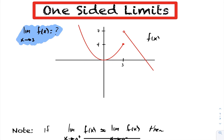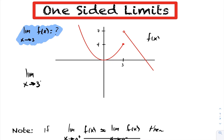To answer that question, what we have to do is take a look at what's called one-sided limits. So if I want to express or ask what is the limit as I approach 3 from the left, notationally we're going to write the limit as x approaches 3, and we're going to put a superscript of a minus sign for the function f(x). This tells the reader that we're approaching 3 from the left-hand side, and the function is approaching 4.